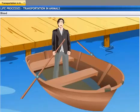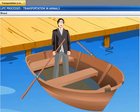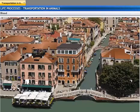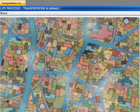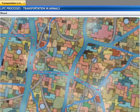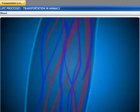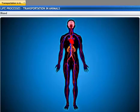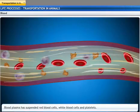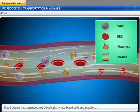In Venice, a boat is the most important mode of transport. Venice is a city of canals where people use boats to travel from one point to another. Similarly, in the circulatory system, blood is the most important mode of transport. Blood is a fluid connective tissue that consists of a fluid medium called plasma, in which red blood cells, white blood cells, and platelets are suspended.